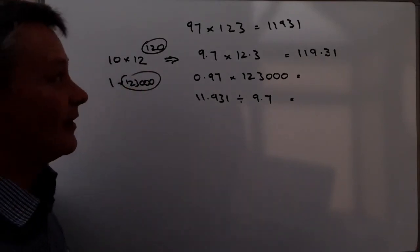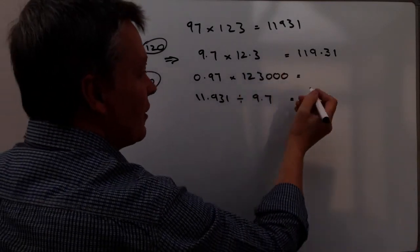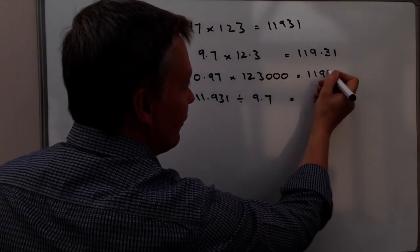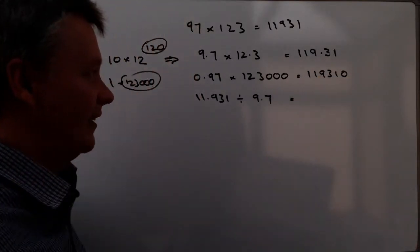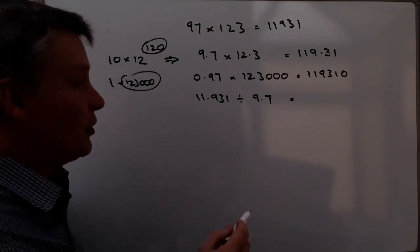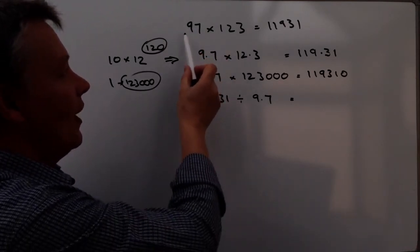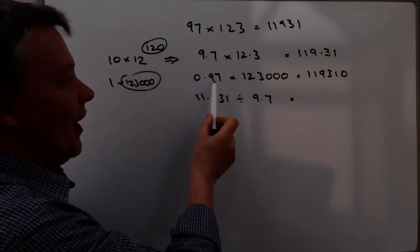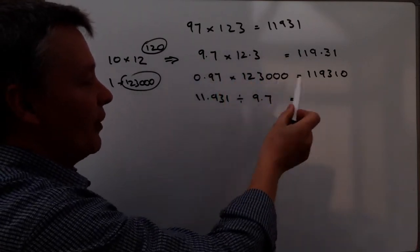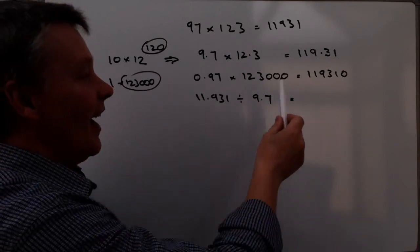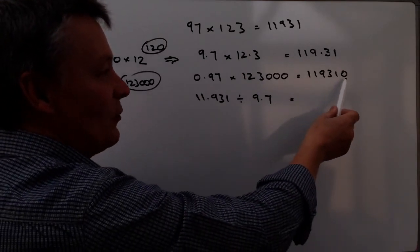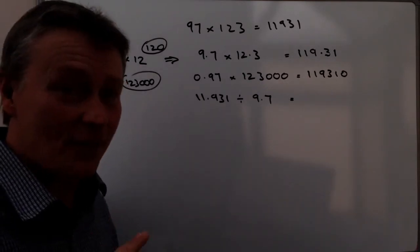So it's 1 times 123,000, which is going to be 123,000. If it's 123,000, then my answer is going to be 119,310. If you want, you could actually move the decimal point two places this way to get that, and then move the decimal point three places that way. And eventually it will net out at one decimal point, and that's absolutely fine.